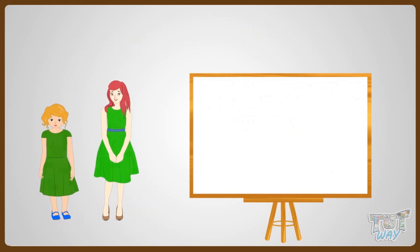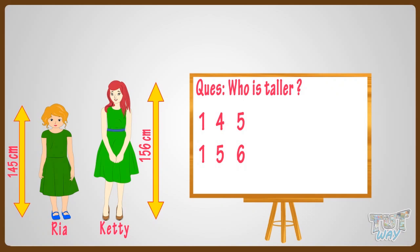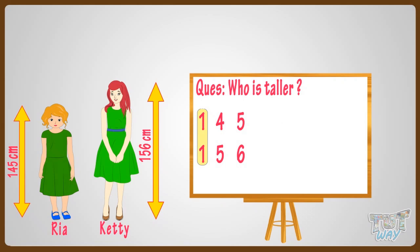Let's take another example. Here are two girls, Rhea and Catty. Rhea is one hundred and forty-five centimeters tall, and Catty is one hundred and fifty-six centimeters tall. Who is taller? Let me help you compare the numbers. Both numbers are three-digit numbers, so first compare the numerals at the hundreds place. Both are the same. We represent it like this.